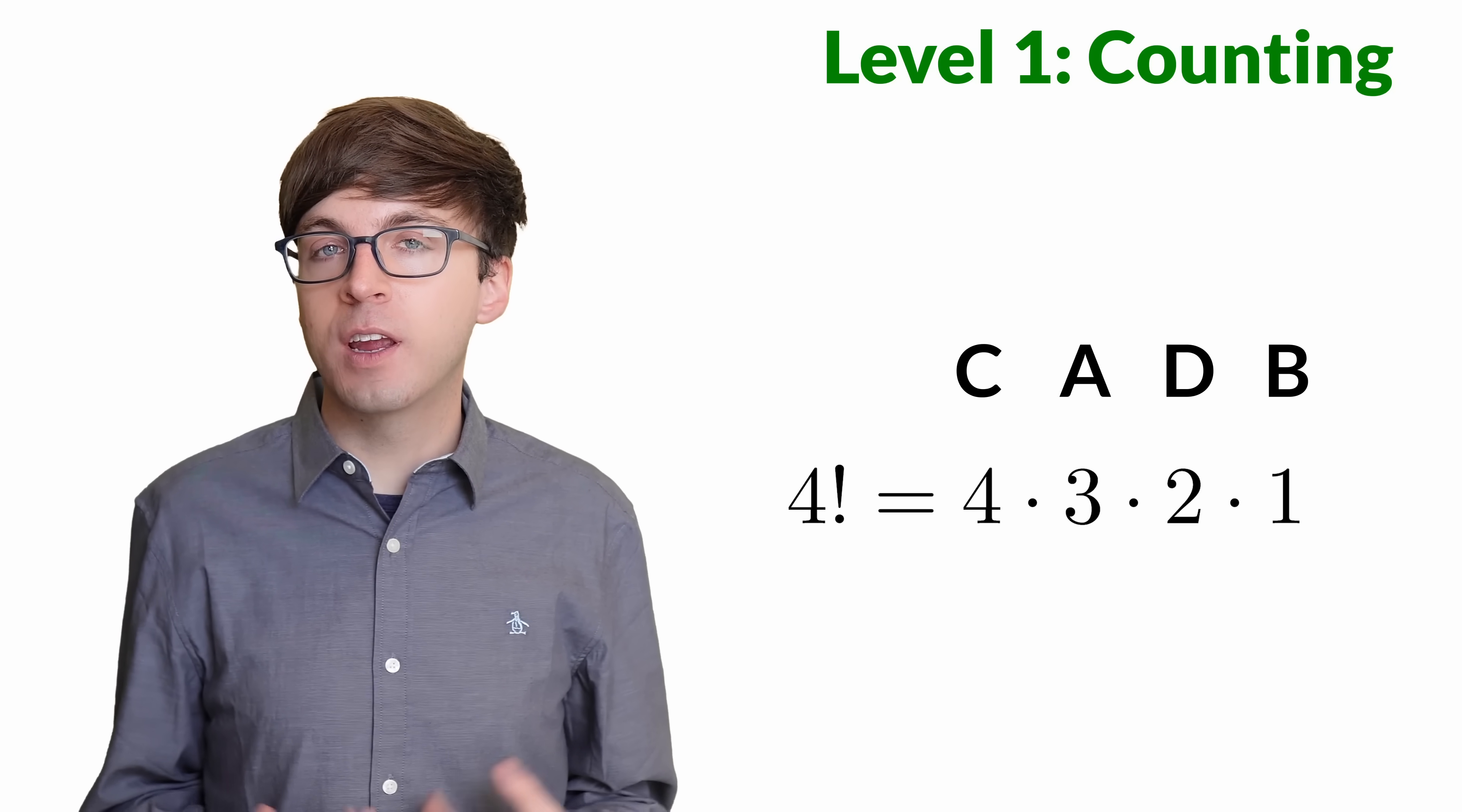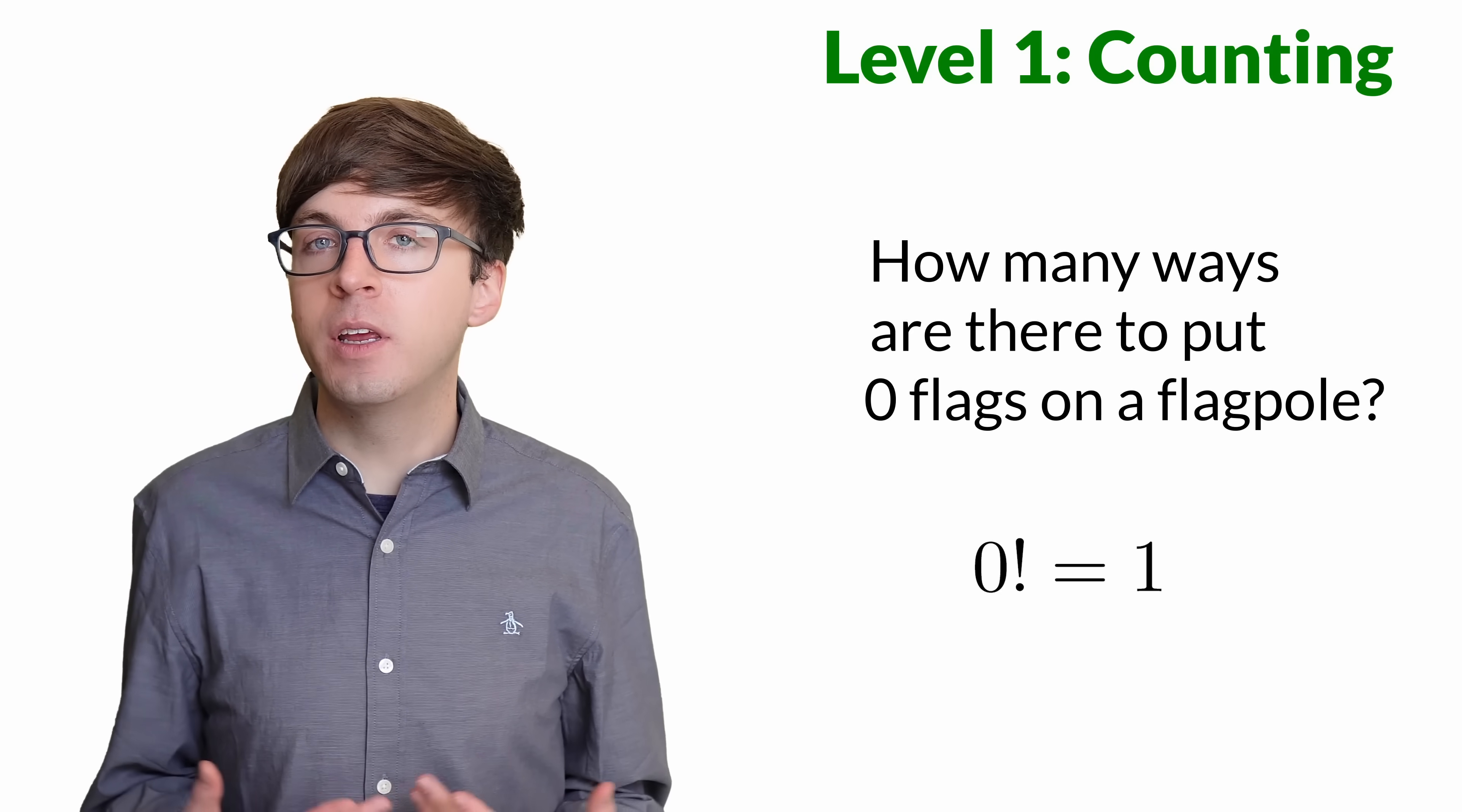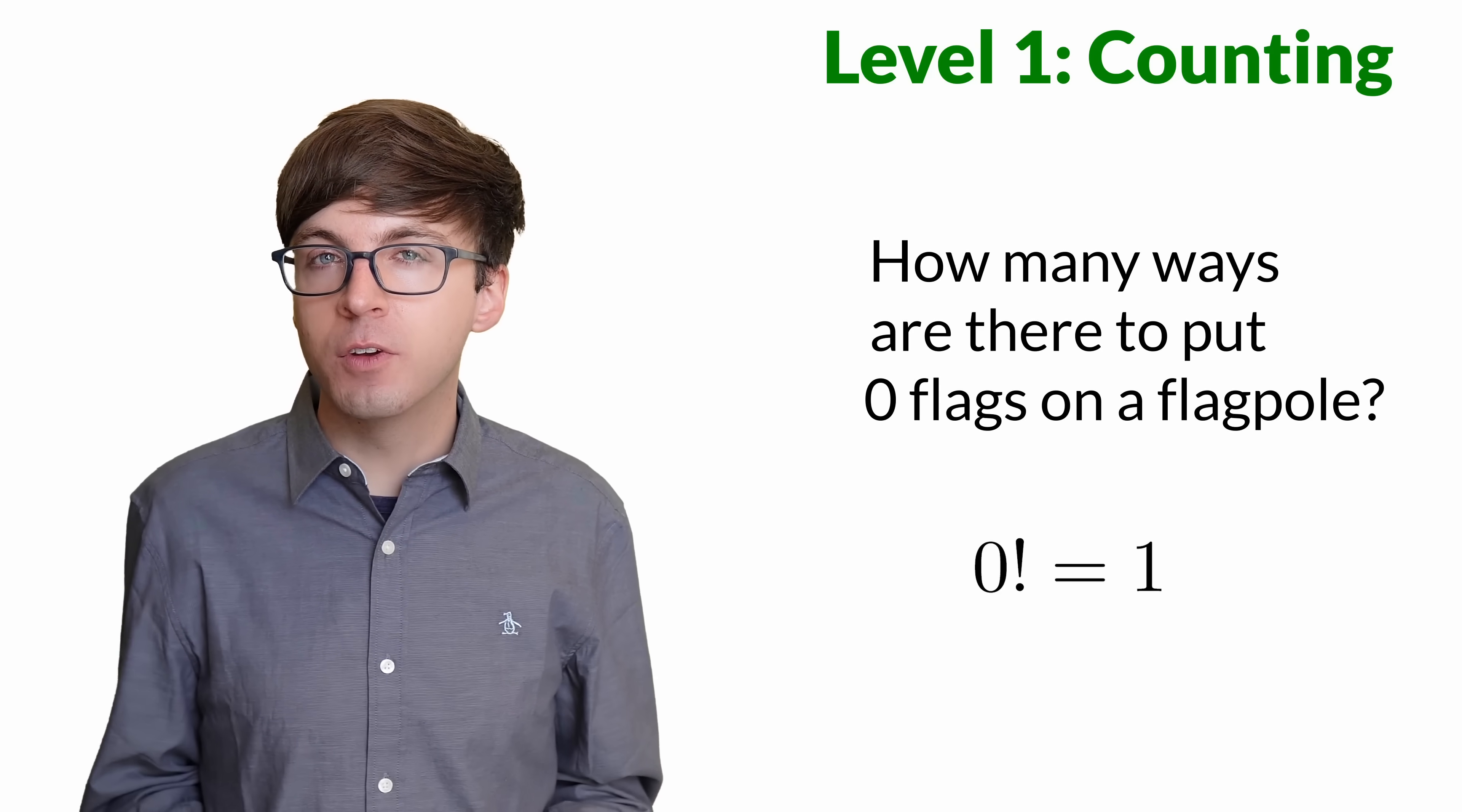So what is 0 factorial? This counts the number of ways to arrange 0 objects in a row. For example, how many ways are there to put 0 flags on a flagpole? Well, there's one way, putting no flags on the pole. It's possible to arrange 0 objects, there's just only this one trivial way to do it.